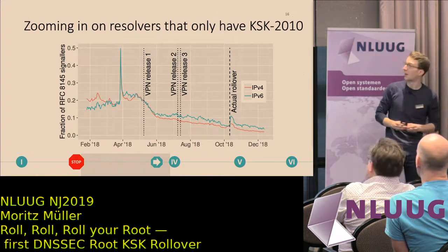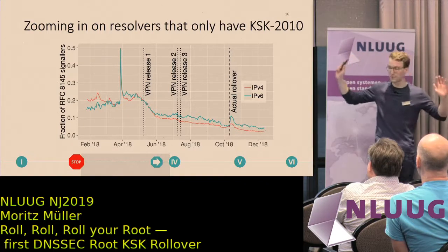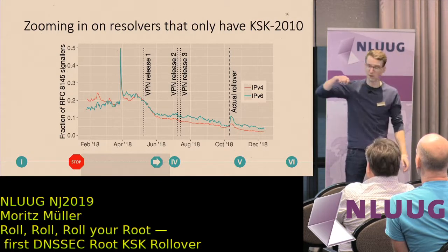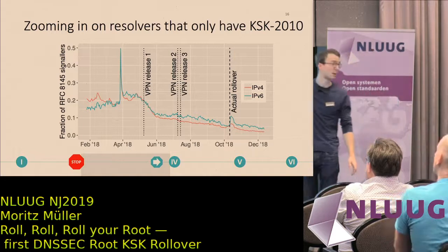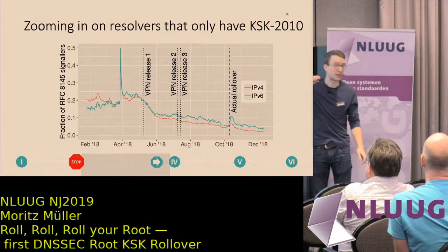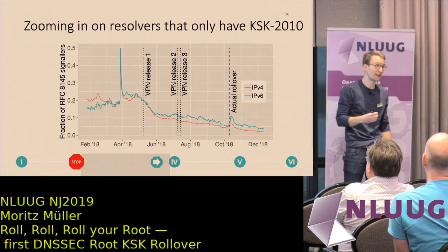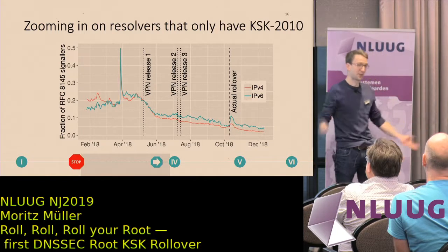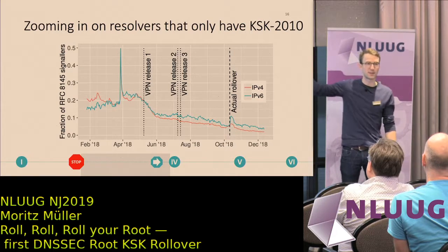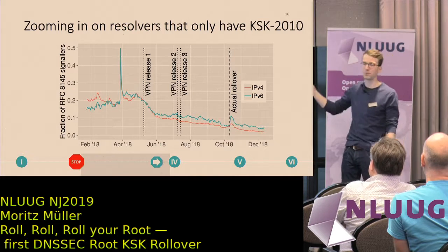A question was raised about a spike in the data. This whole figure is quite a mystery. We can see the correlation with the VPN release, but there are also strange things: a spike we don't know the cause of, and another spike after the actual rollover where we see a rise of resolvers not trusting KSK 2017 again. The telemetry data has some flaws that we probably need to fix before the next rollover.